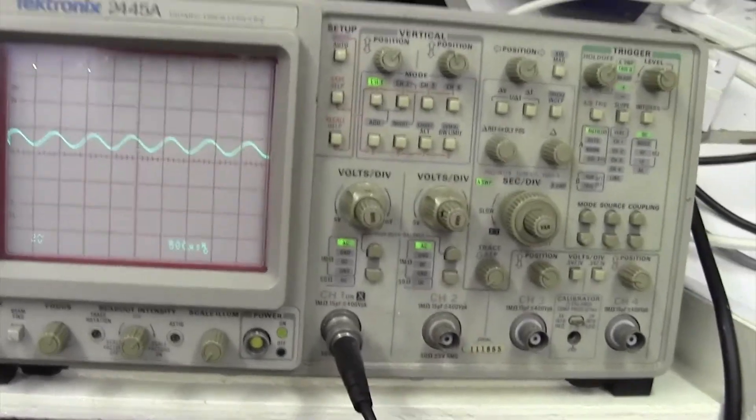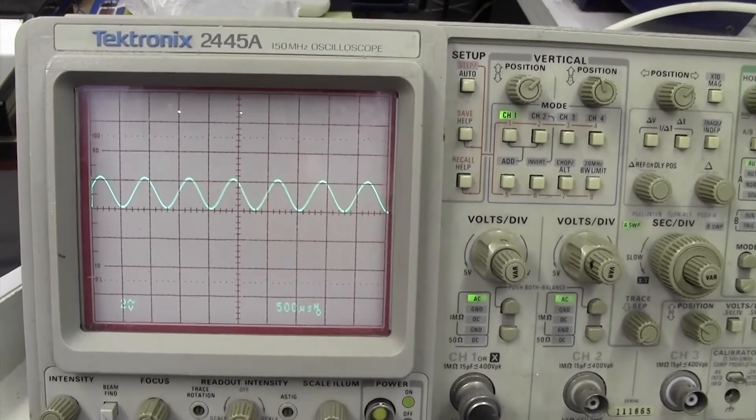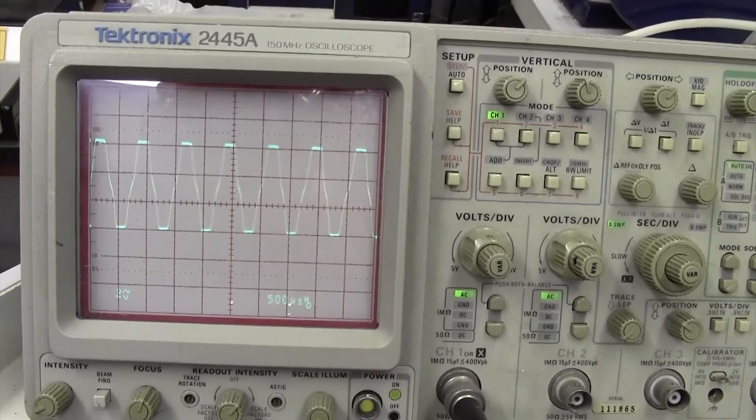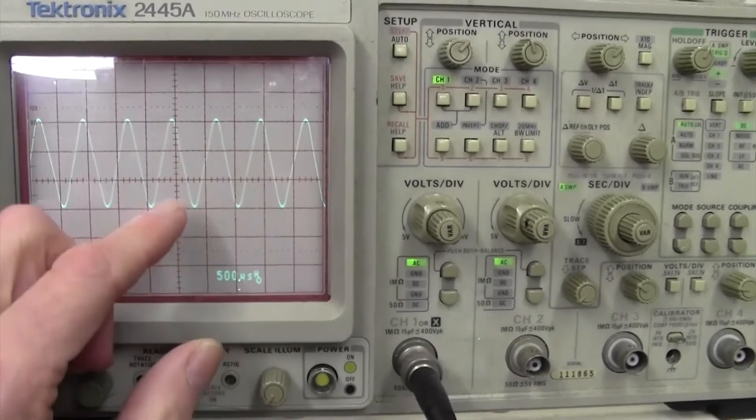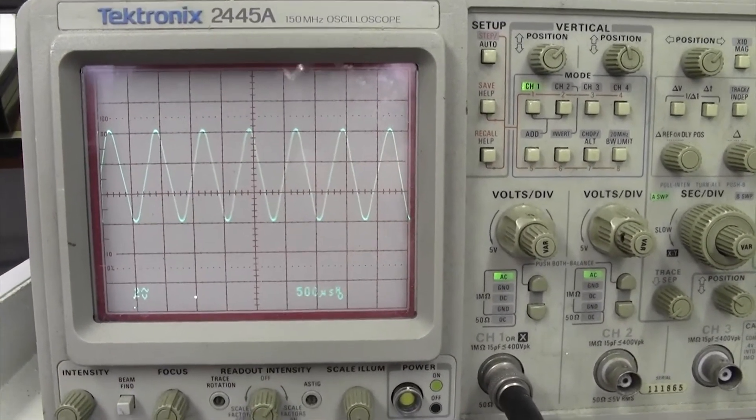Now if you watch as I turn up the input volume on the amplifier, you see that's increasing. And at some point, there, it's squaring off. Do you see that squaring off there? I'll just back it off a little bit. And we've got here 20, 40, 60 volts, peak-to-peak sine wave.